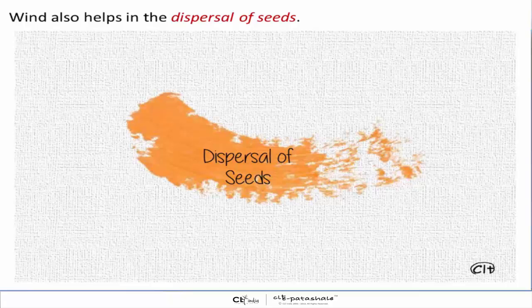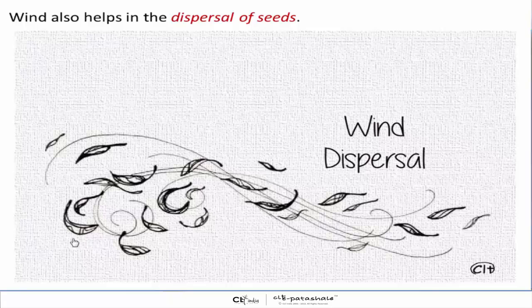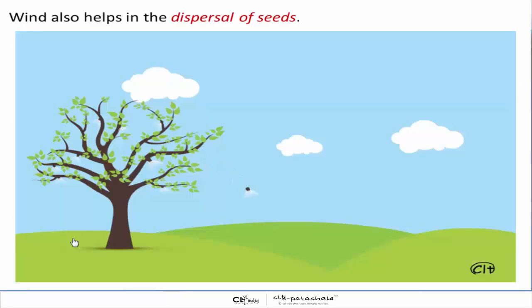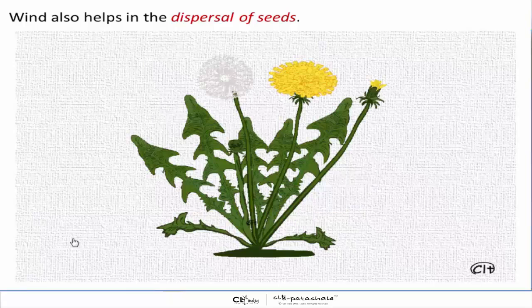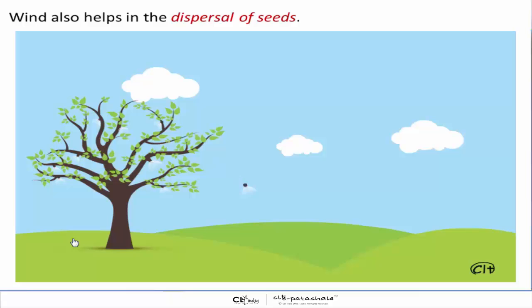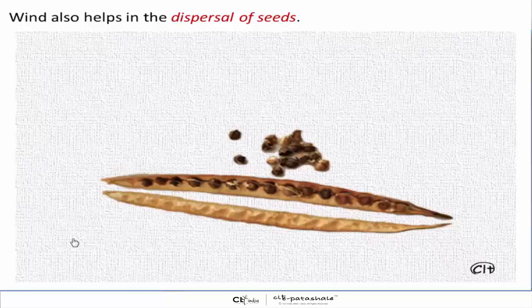Wind, which is nothing but air moving at a high speed, also helps in the dispersal of seeds. As you can see, the plants have their seeds and the wind disperses them to nearby locations, which grows the next generation of plants. Plants like cotton and sunflower propagate their seeds. You can see that the wind thus helps in propagation of life on earth.